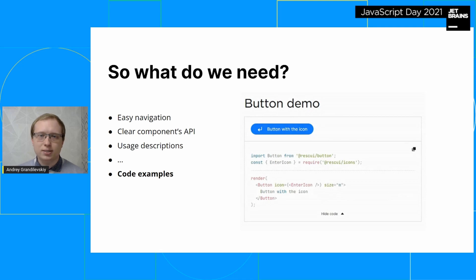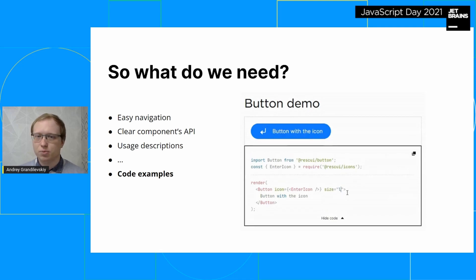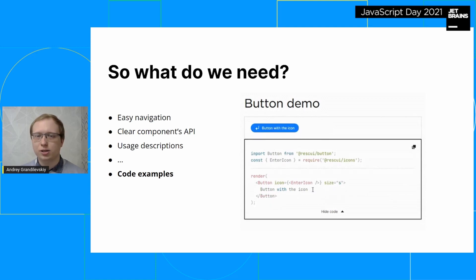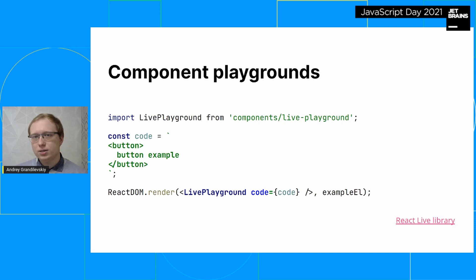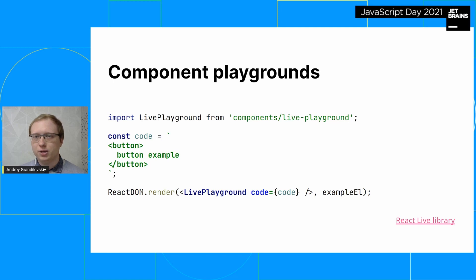But sometimes that's not enough. You want to tinker with an example right on the spot — try a different combination of props, change the layout or the values. It seems not so difficult. There are ready-to-use libraries that supply playground components. You just put the example code into them and get the compiled result in the browser, with the ability to change the code on the fly.